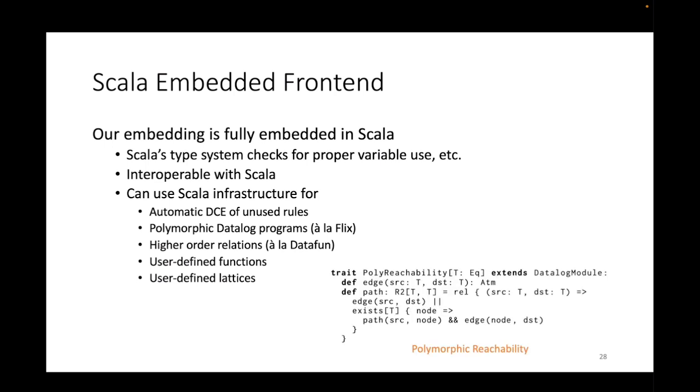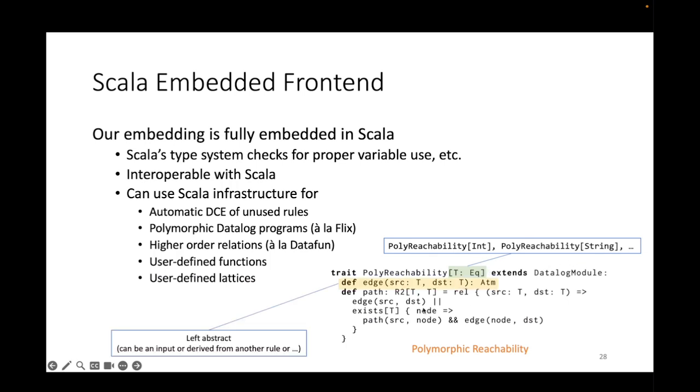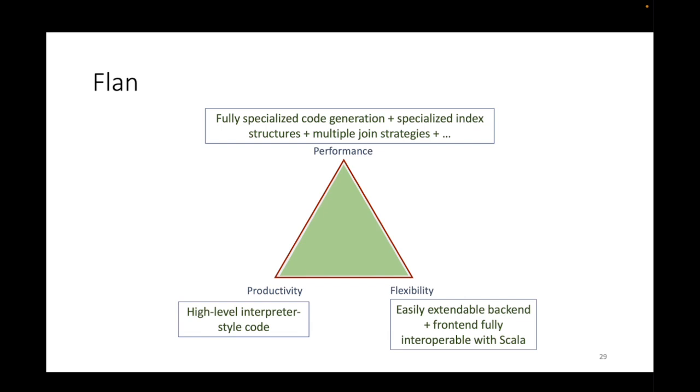For example, if you wanted to do a version of the reachability program that is polymorphic, we can pretty much use Scala infrastructure for that. We can have an int version of this or a string version of this. Also, in this example, the edge relation is left abstract, so we can have a subclass that provides edge as an input, or we can have another subclass that provides this as a result of another computation or another rule. So what we get is a performant, flexible system that is still having the developer productivity we desire.